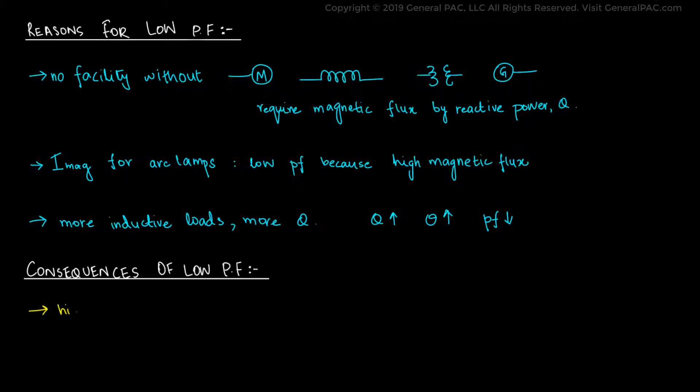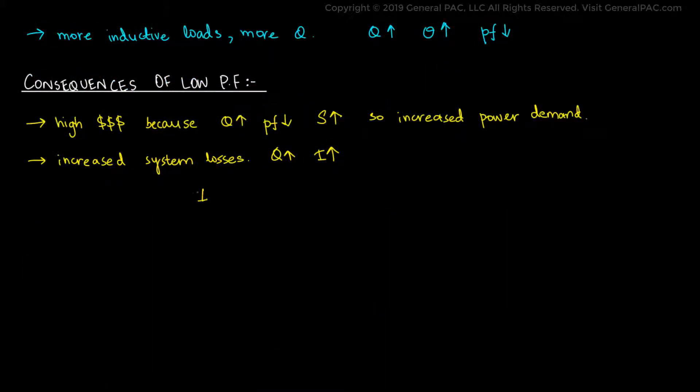The first and foremost important reason is high utility cost. This is because a higher reactive power and a lower power factor causes an increase in overall apparent power drawn by the system and subsequently increasing the power demand of the facility. Another issue caused by low power factor is an increase in the system losses. A higher reactive power requirement draws more current and the square of the current is directly proportional to the line losses.